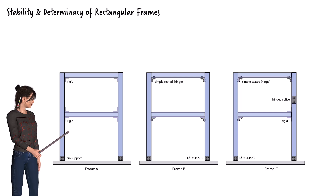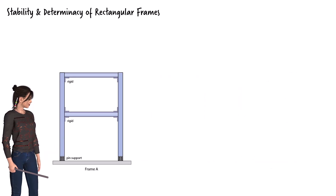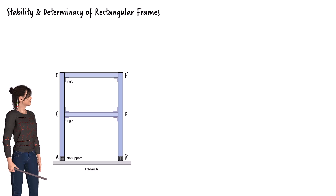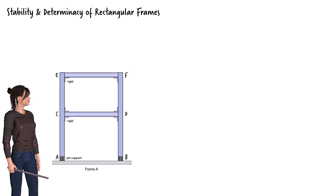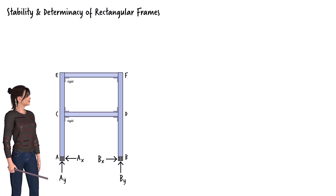Let's start with this frame. The frame rests on two pin supports at points A and B. Joints C, D, E, and F are rigid connections. Since these internal joints are rigid and the frame has four support reactions, we know the system is stable.